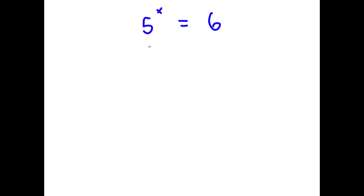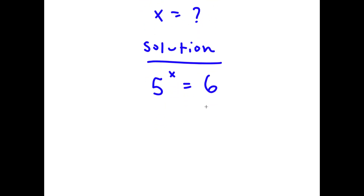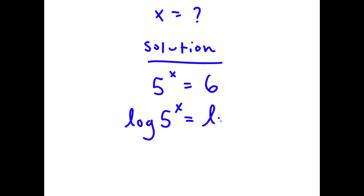In this problem I have 5 to the power of x is equal to 6, and I want to find the value of x. For my solution, I first start with 5 to the power of x is equal to 6, and I'm going to take the log on both sides. So now I have log of 5 to the power of x is equal to log of 6.